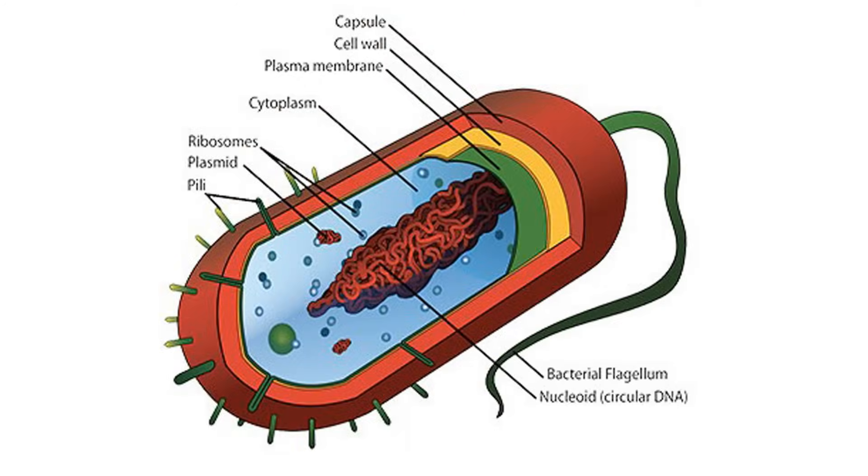Number 23. Bacteria Are Everywhere. In fact, if every cell in your body could vote, bacteria would have a 90% majority. By cell count, there are more bacteria cells inside of you than human cells.